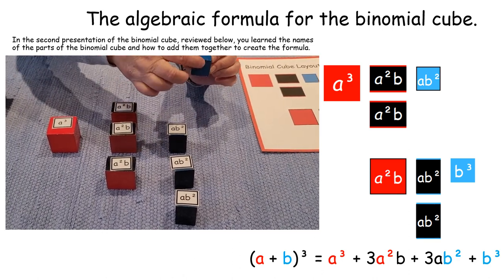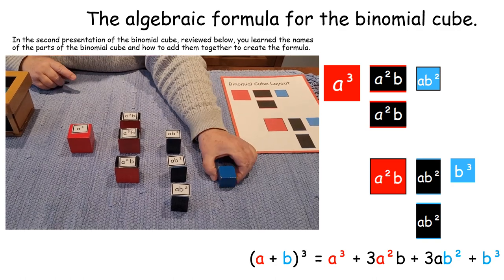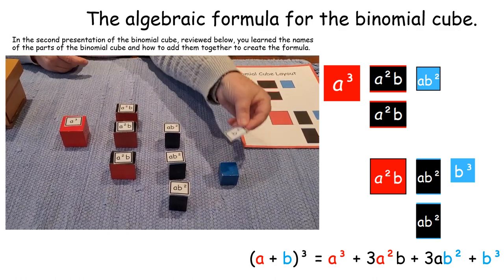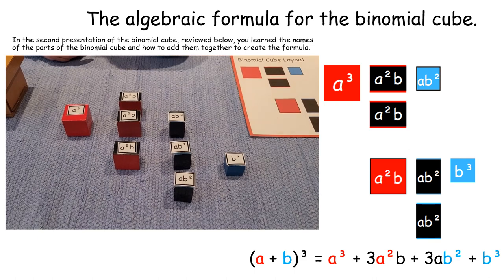And of course, this one is the cube. The length, the width, and the height are all the same, but it's a second dimension, so we call it B. We call it B cubed.